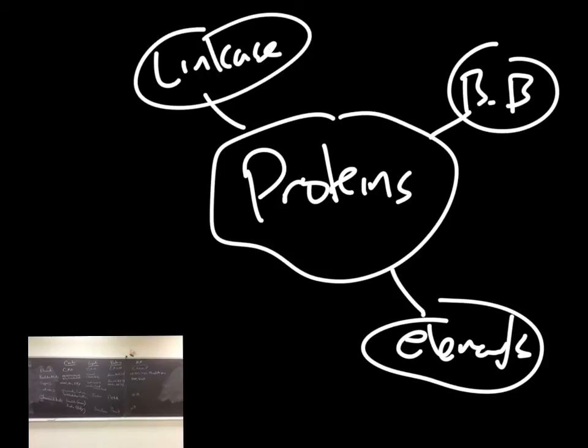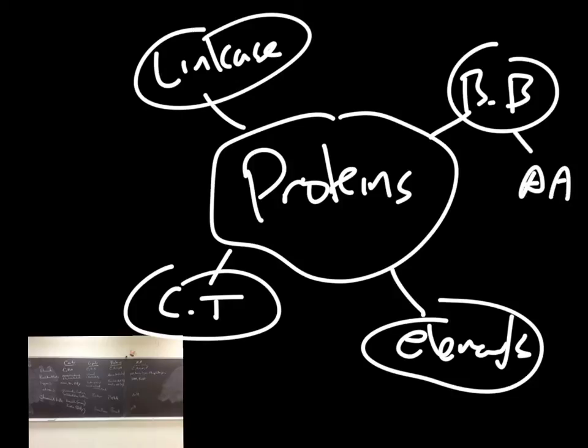All right. And with the linkages part here, we want to make sure that we understand that everything is put together via dehydration synthesis. All right. And so then maybe we have chemical tests, CT there. Okay. Are there any different types of proteins or building blocks, amino acids here. And we can kind of branch off all the different amino acids there.